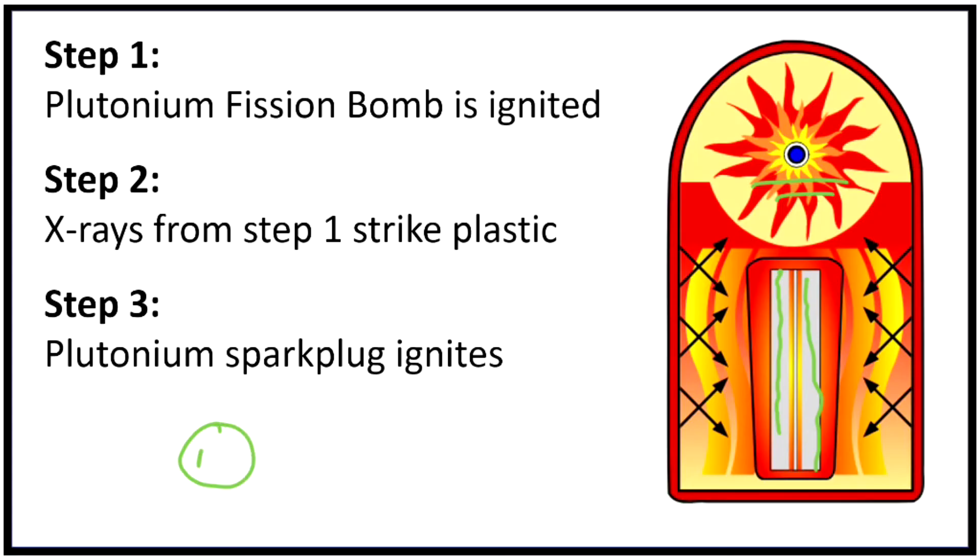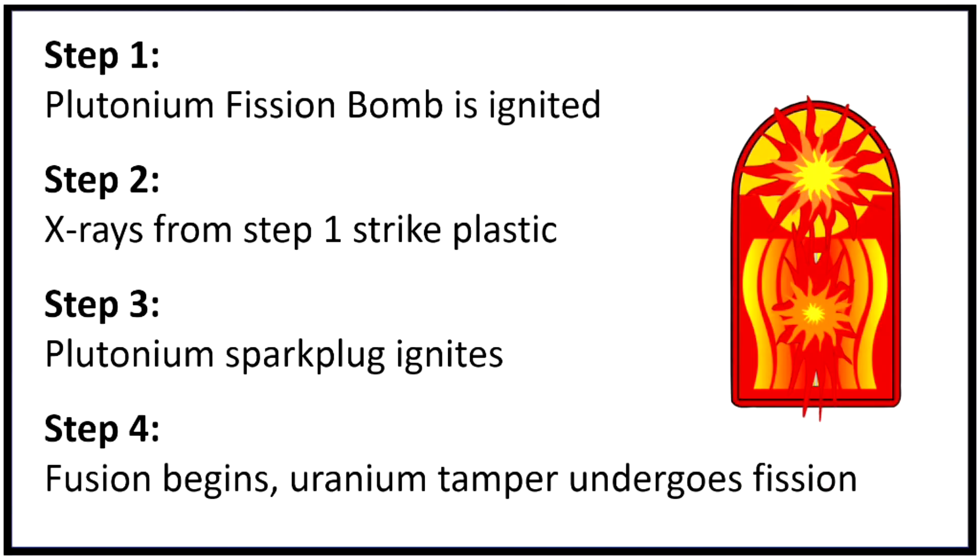And I have to get another nuclei, also with protons in it, to come together. So you can see those two positive things that we're cramming together. And that takes a lot of energy. Once they get close enough, then there's the chance for a fusion reaction. So step four, and the final step, is that fusion begins. It turns out that the lithium in the bomb becomes hydrogen and then undergoes fusion.